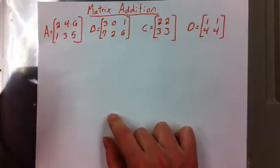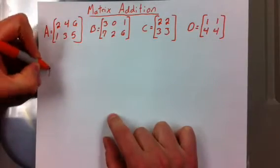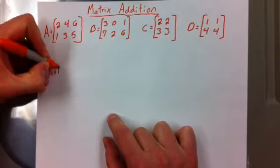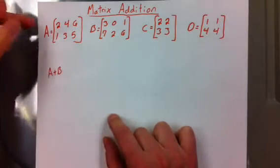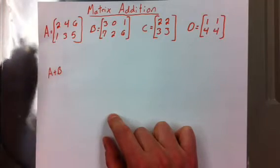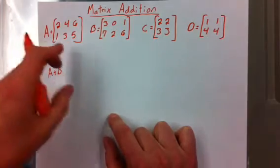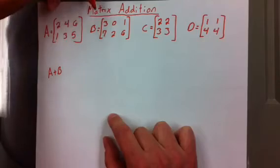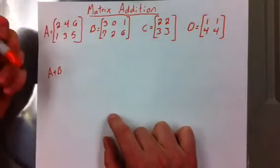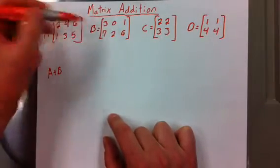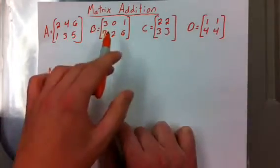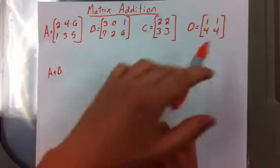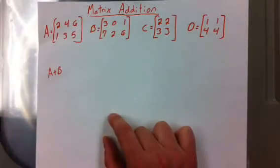We have our matrices laid out right there, and let's say we want to do A plus B. When you add or subtract matrices, you can only add or subtract them if they are the same size. So A and B are the same size matrix, and C and D are the same size. So we can add and subtract A and B, and we can add and subtract C and D, but we cannot add and subtract B and C or A and D because they're not the same size.